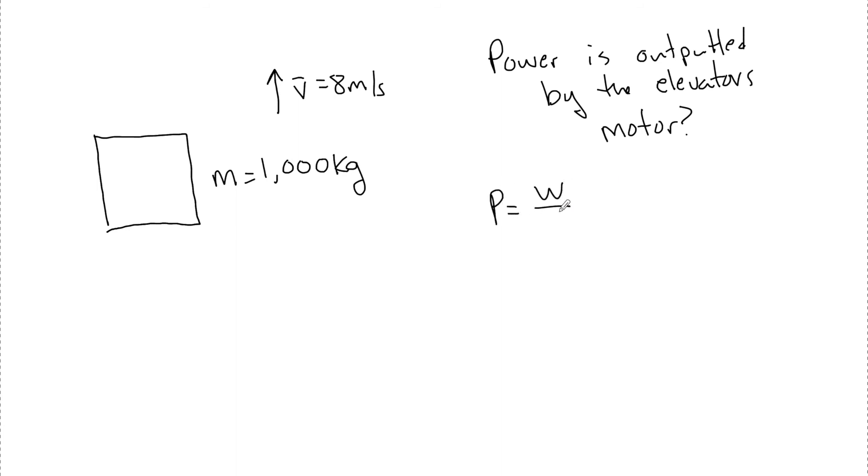Let's look at another example where we'll have an elevator. And this elevator has a mass equal to 1,000 kilograms, so it is big. It is going to move upwards with a V bar equal to 8 meters per second. And I want to know how much power is outputted by the elevator's motor. So we have power equals work over time, which equals F D over T, which equals F V bar. And we see from our givens, we have a V bar here, so I assume that I'm going to have to use this formula right here.